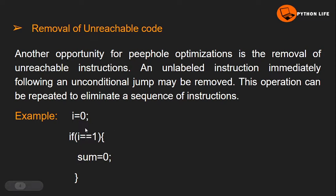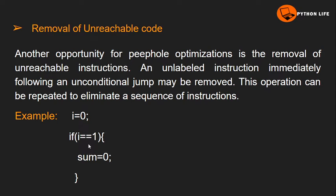Since i is equal to 0, the condition i == 1 can never be true, so the block inside the if statement will never execute. Therefore this block can be removed as unreachable code. This is the removal of unreachable code.